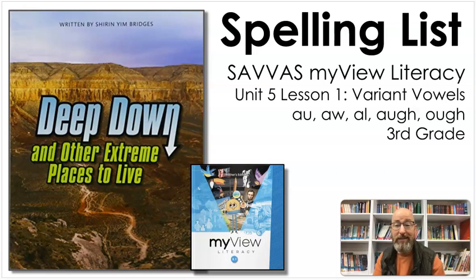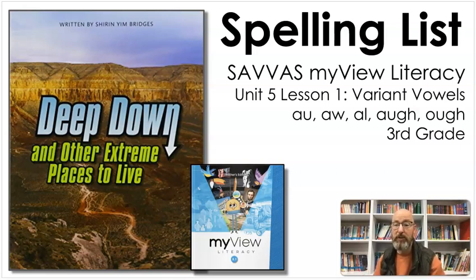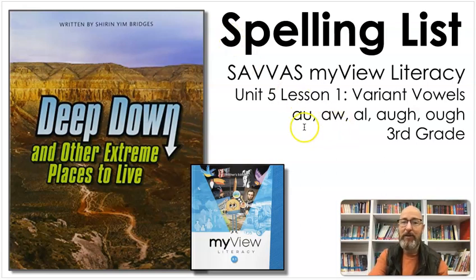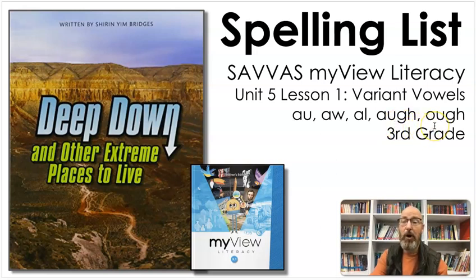Our phonics skill this week is on variant vowels. What we're going to be looking at this week is five different ways we can make the "aw" sound. We can see them all right here: A-U, A-W, A-L, A-U-G-H, and O-U-G-H.